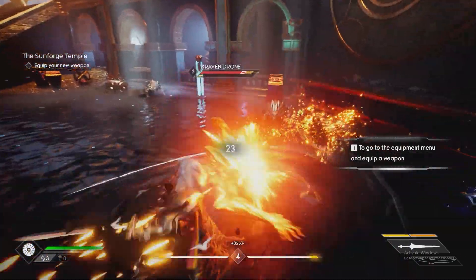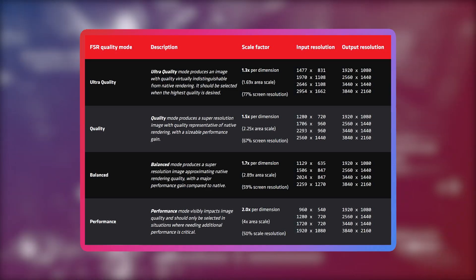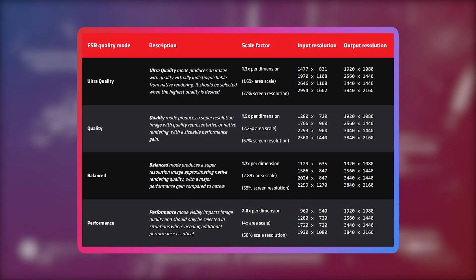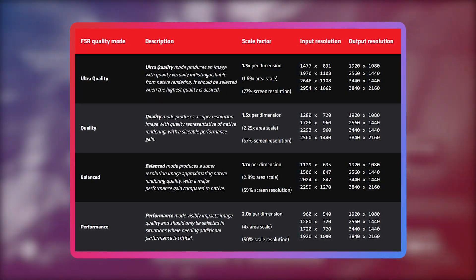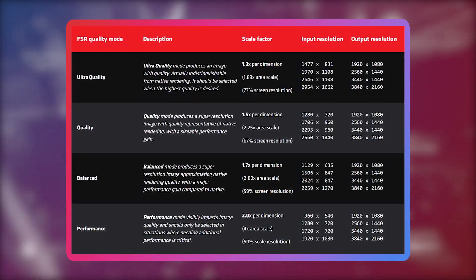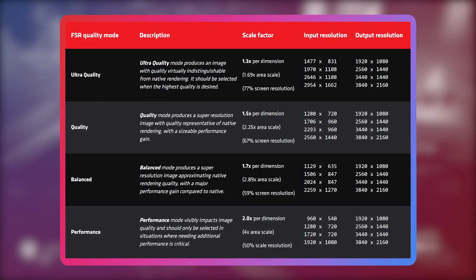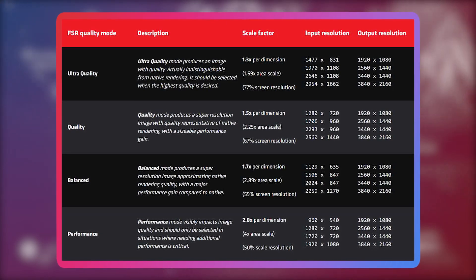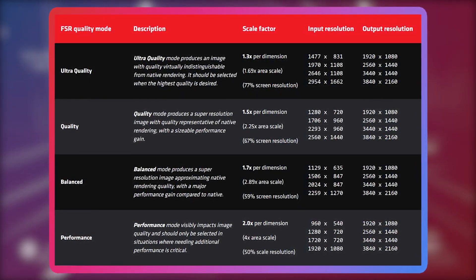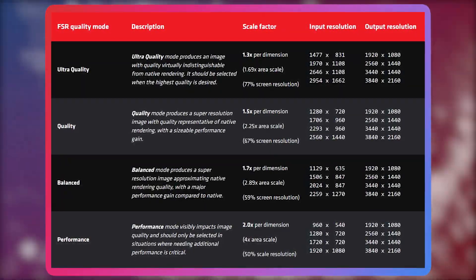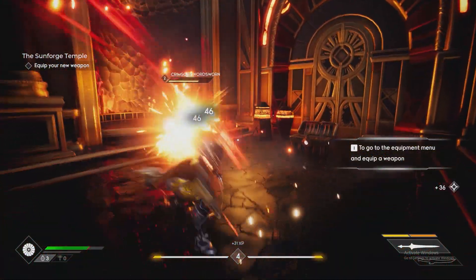What are the scaling factors with FSR? A 1.3x scale factor for Ultra Quality, with an internal resolution of 2954×1662. A 1.5x scale factor for Quality, with an internal resolution of 2560×1440 — standard 1440p. A 1.7x scale factor for Balanced, with an internal resolution of 2259×1270. And a 2x scale factor for Performance, with an internal resolution of 1920×1080 — standard 1080p. Meaning even on Performance, the worst mode for visual quality, you're still rendering at 1080p when in 4K.